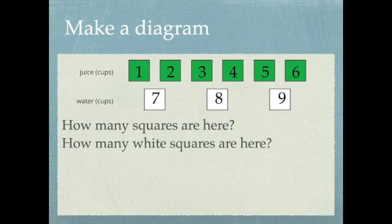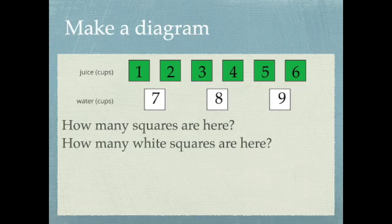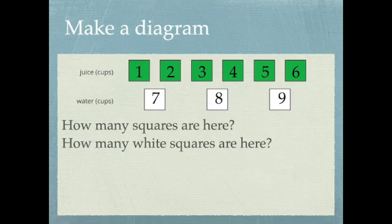And then I have to ask how many white squares are there? White squares represent the water. So there's three white squares here.